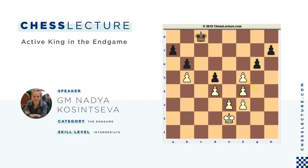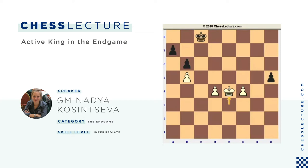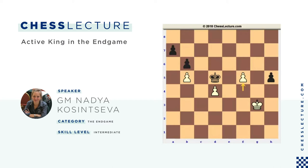White has to be accurate: first gxf5 gxf5, then e4. Now if black takes twice — dxe4 fxe4 — white plays King e3, and after h5, King takes e4, the white king is in the square of the black's h-pawn and can easily catch it, while the black king cannot stop two white passed pawns. For example, after King d7, white goes King f3, King g3, and just pushes the f-pawn — the pawn on d4 is untouchable because white plays f6, f7 and queens the f-pawn, while the white king goes to h4 to take the h5 pawn. White gets a decisive advantage.